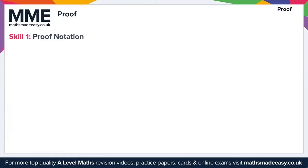Welcome to this Maths Made Easy video on proof. To start with, let's take a look at skill 1 on proof notation. The following notation will be used throughout proofs but will also be relevant to topics later in the course. A set is a collection of objects or numbers called elements, denoted using a capital letter, with curly brackets showing what belongs to the set. For example, the set A has the elements 3, 4, and 5.